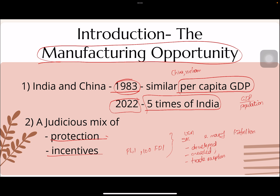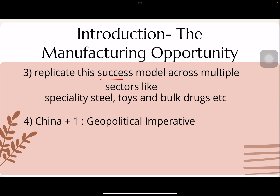To grab this opportunity more effectively, India should replicate its success model across multiple sectors including specialty steel, toys, bulk drugs, automobiles, auto components, technical textiles, food products, solar PV modules, and medical devices. During the pandemic, China attempted to dominate PPE kit manufacturing and expand influence in Africa and Europe; India can seize similar opportunities, replicate the manufacturing and export model, and increase its per capita GDP.